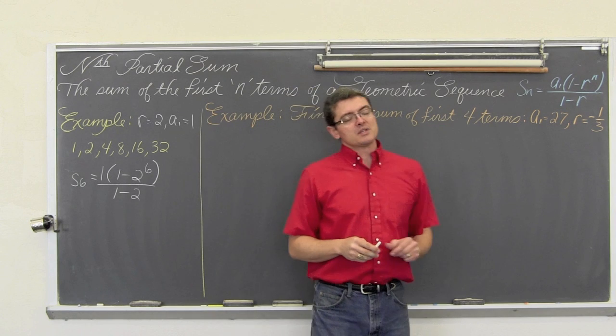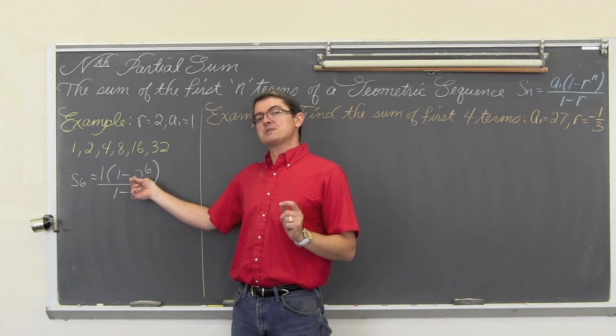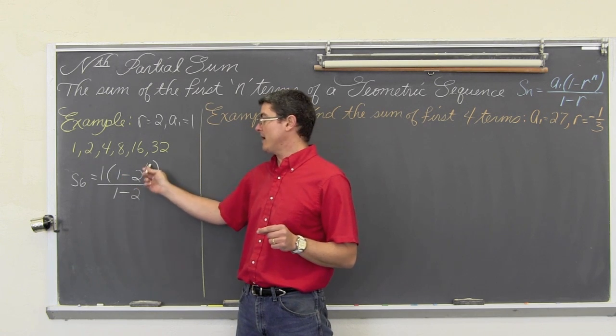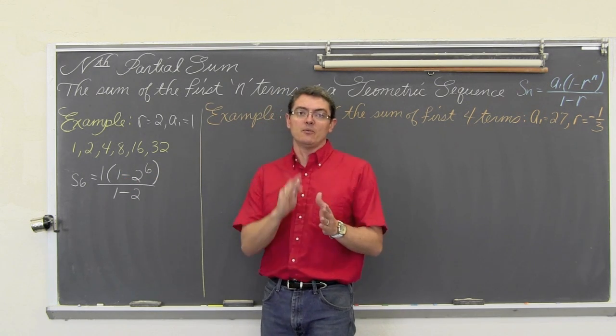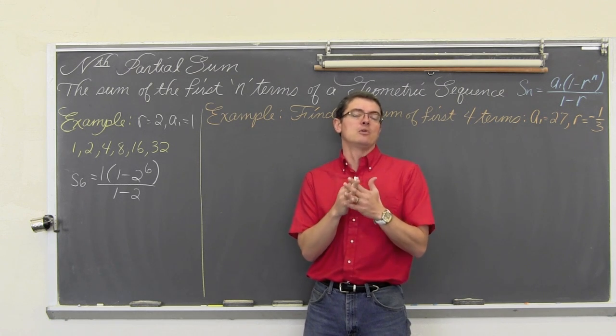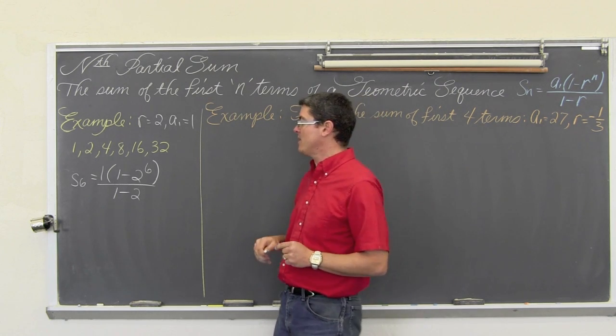Make sure that if your r value is negative you do not cancel it with the minus that is in the equation. You have to apply exponents before you multiply. When you have two negatives side by side and you cancel those and make it a plus sign, you are doing multiplication. So don't mess up the order of operations.